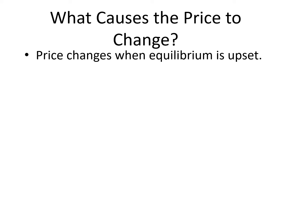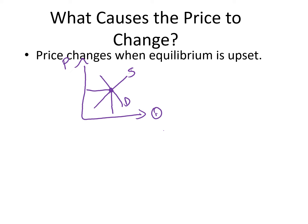Price changes when equilibrium is upset. This happens due to a shift in demand, which is a change in buyer's behavior. Looking at a diagram with supply, demand, and the original equilibrium price and quantity — always remember to label — the demand curve can shift to the left or to the right. As you can see, we get a new equilibrium point at the new intersection with the supply curve, marked as the new red point.